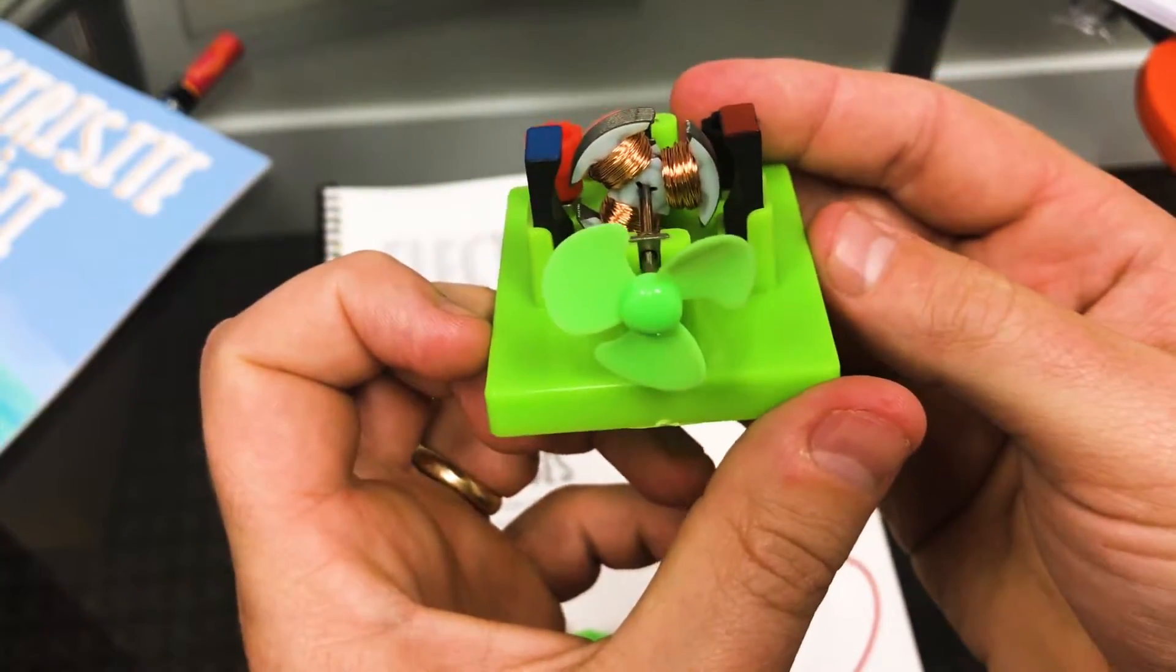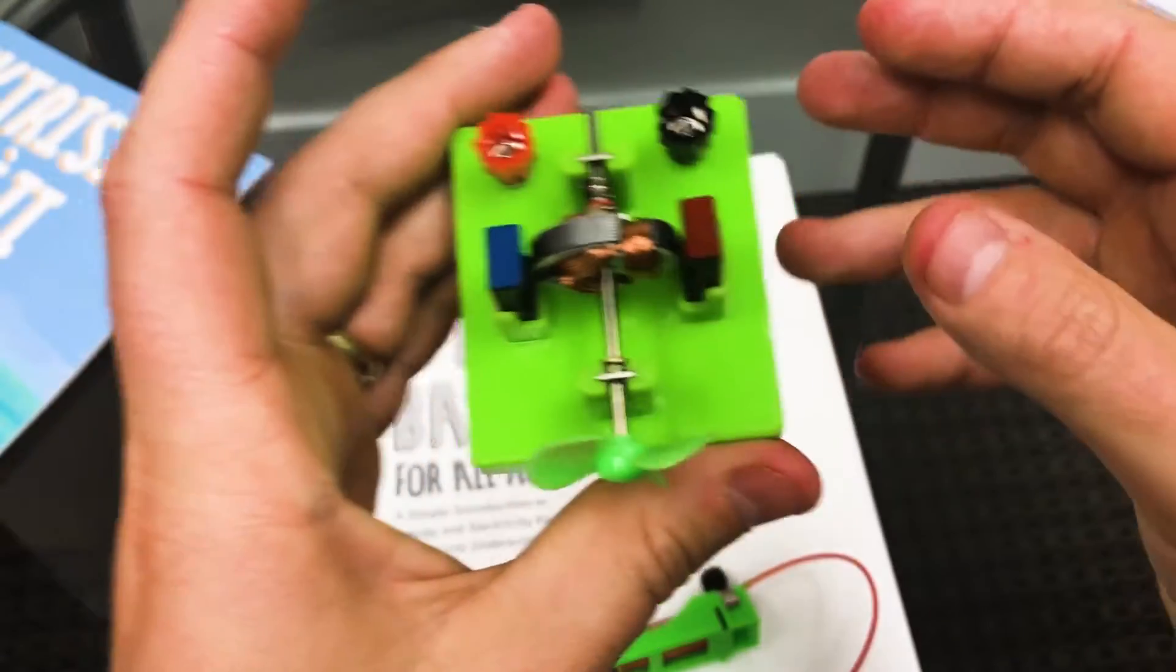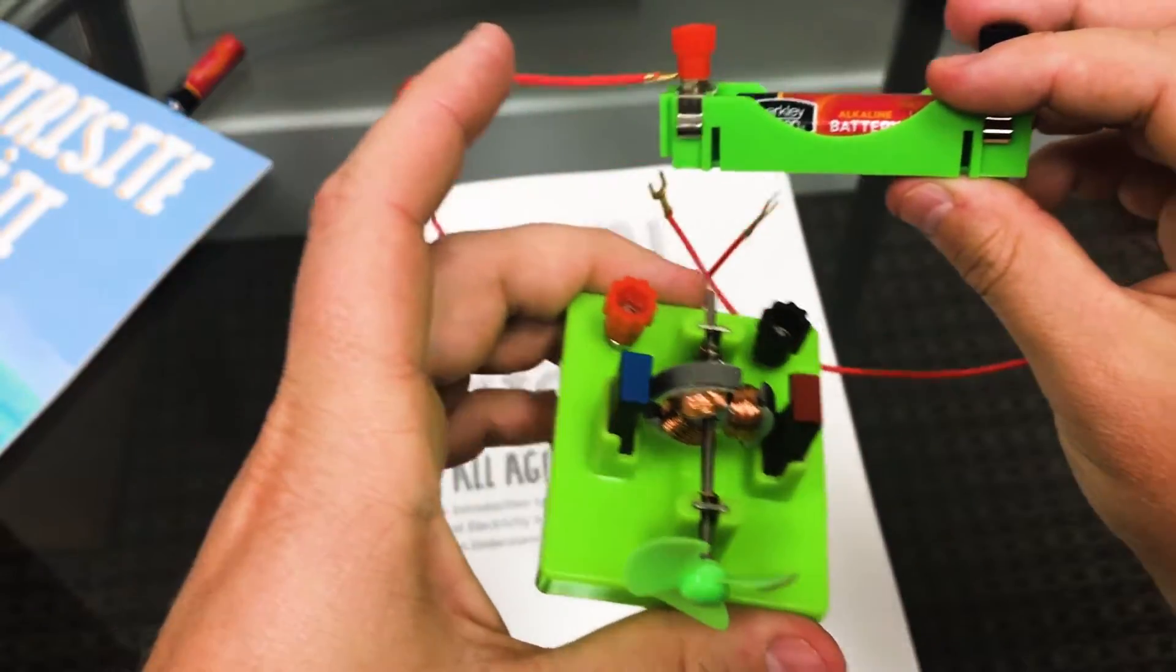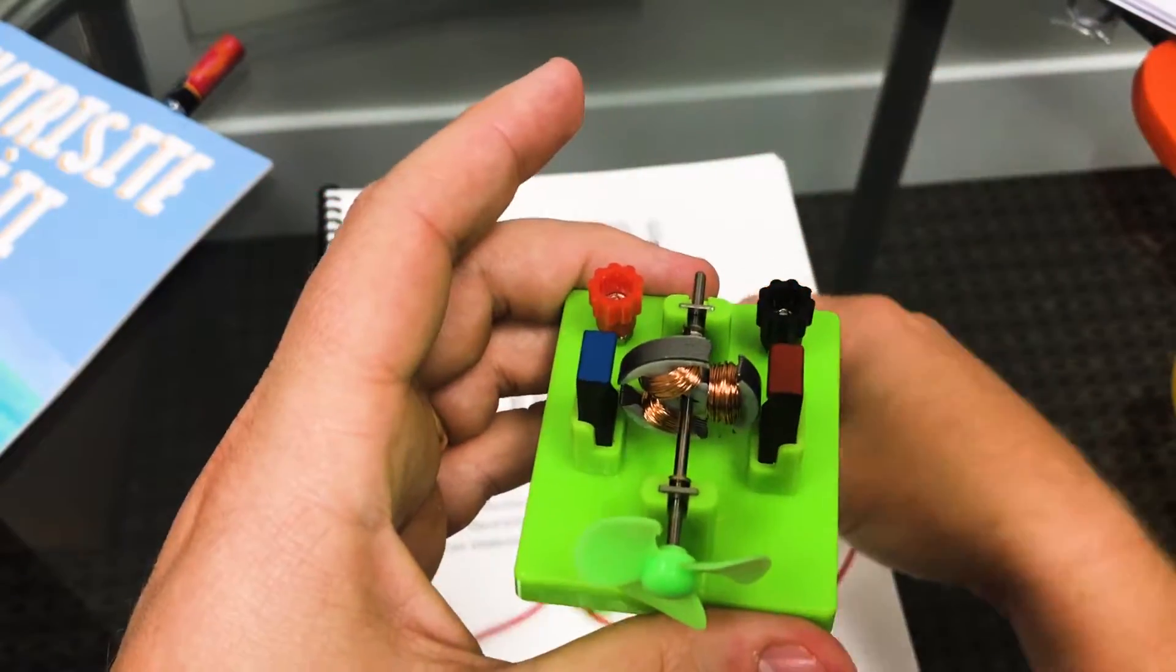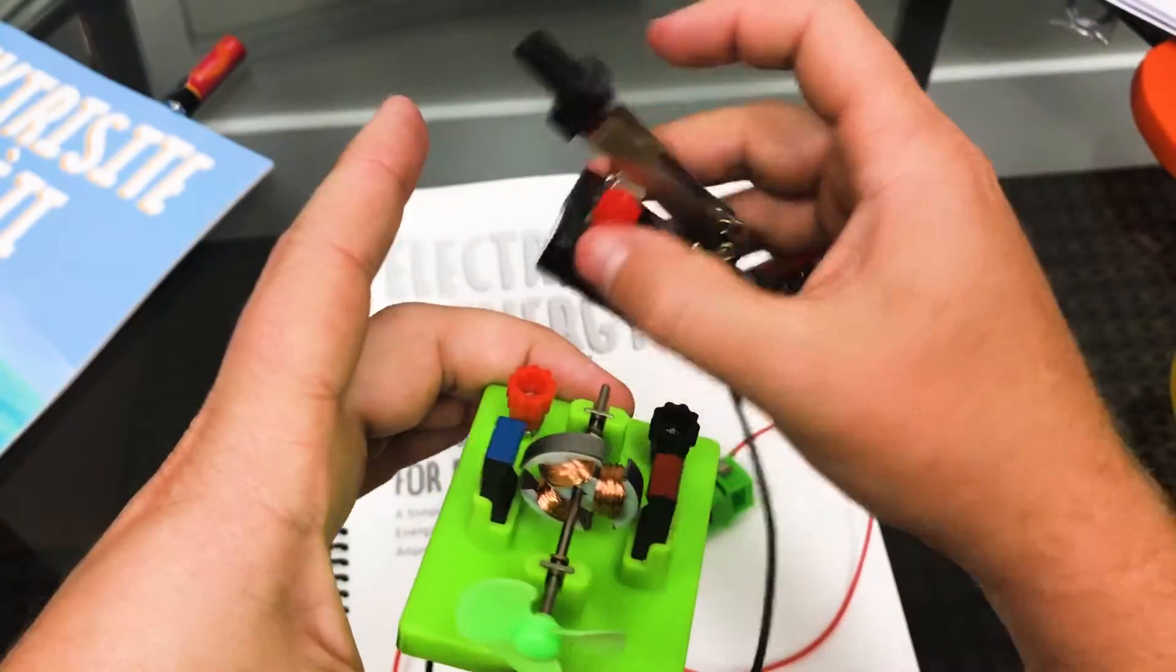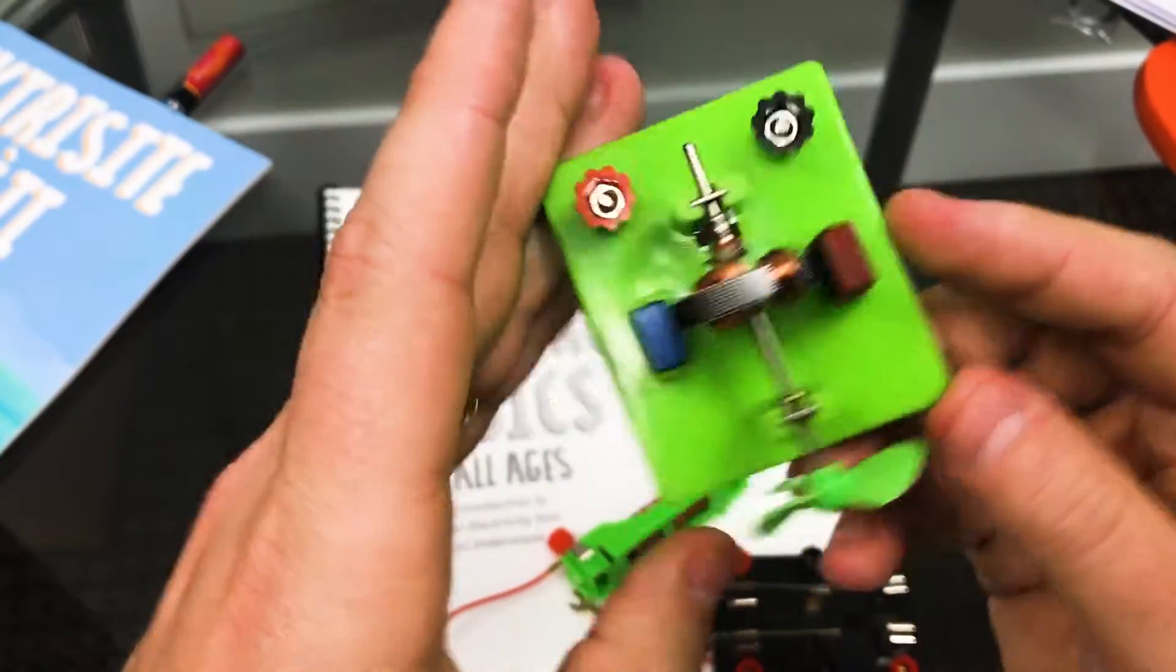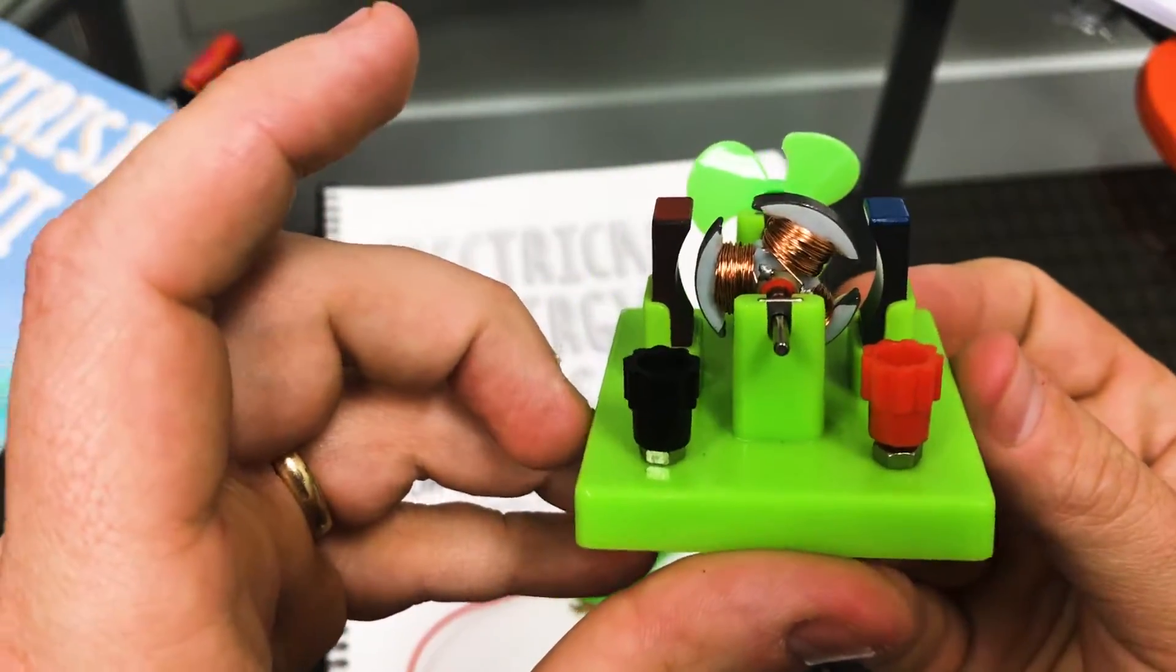It all relies on a power source that creates or provides that potential difference, and then a switch that controls it on and off. So there you go, that is a basic DC electric motor.